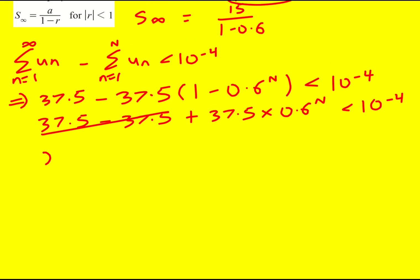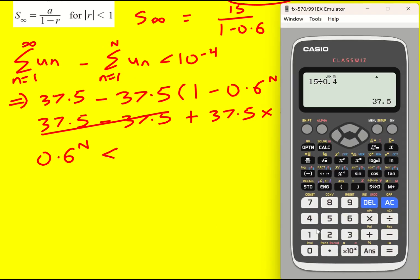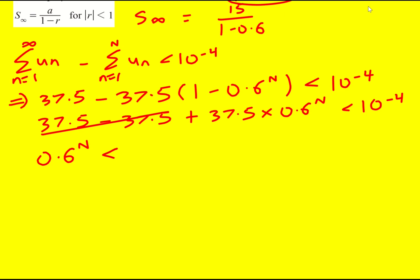Now I've got myself an exponential equation to solve, so 0.6 to the n is going to be less than. So let's take the 10 to the minus 4 and divide by 37.5, which gives 1 over 375,000.